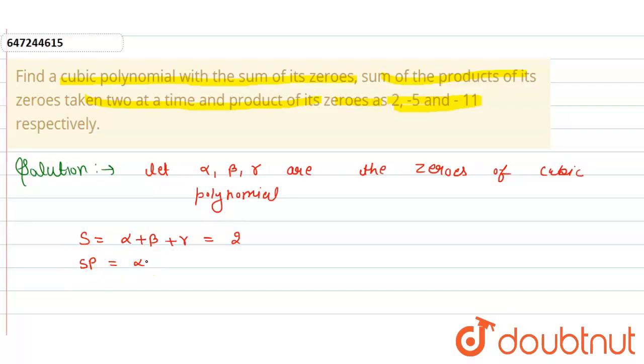That is alpha beta plus beta gamma plus gamma alpha, which equals minus five. And the product, which I have given, is alpha beta gamma. That equals minus eleven.